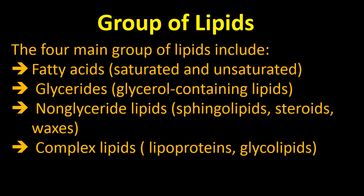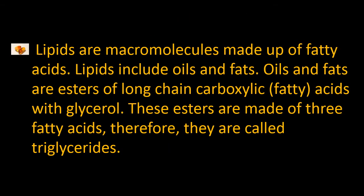There are four main groups of lipids. First, fatty acids — they can be saturated (single bond) or unsaturated (double bond between carbon atoms). Second, glycerides — glycerol-containing lipids. Third, non-glyceride lipids — lipids which do not have a glycerol molecule, with examples including sphingolipids, steroids, and waxes. Fourth, complex lipids such as lipoproteins and glycolipids.